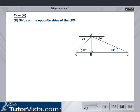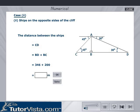In the figure, the distance between the two ships equals CD = BD + BC = 346 + 200 = 546 meters.